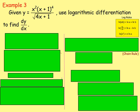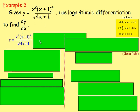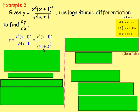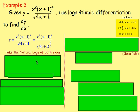Example three: given y = x²(x+1)⁴ / √(4x+1), find dy/dx using logarithmic differentiation. First, rewrite the square root as a fractional index: √(4x+1) = (4x+1)^(1/2). So the function becomes x²(x+1)⁴ / (4x+1)^(1/2). This involves powers and would be quite difficult to differentiate directly, so we take the natural logs of both sides.